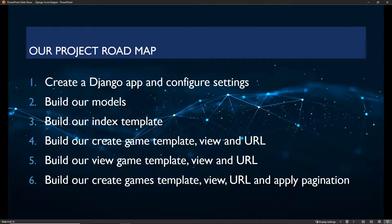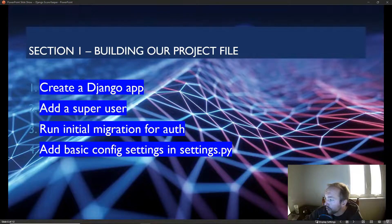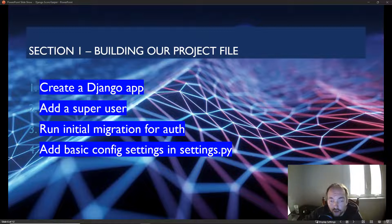We're going to build our create-games template, view, URL, and apply pagination — which means if we have 100 records we show 20 on each page. That's pagination in a nutshell. Section one: getting started. We're going to create a Django app, add a superuser, run our initial migration, and add some basic config settings in settings.py.